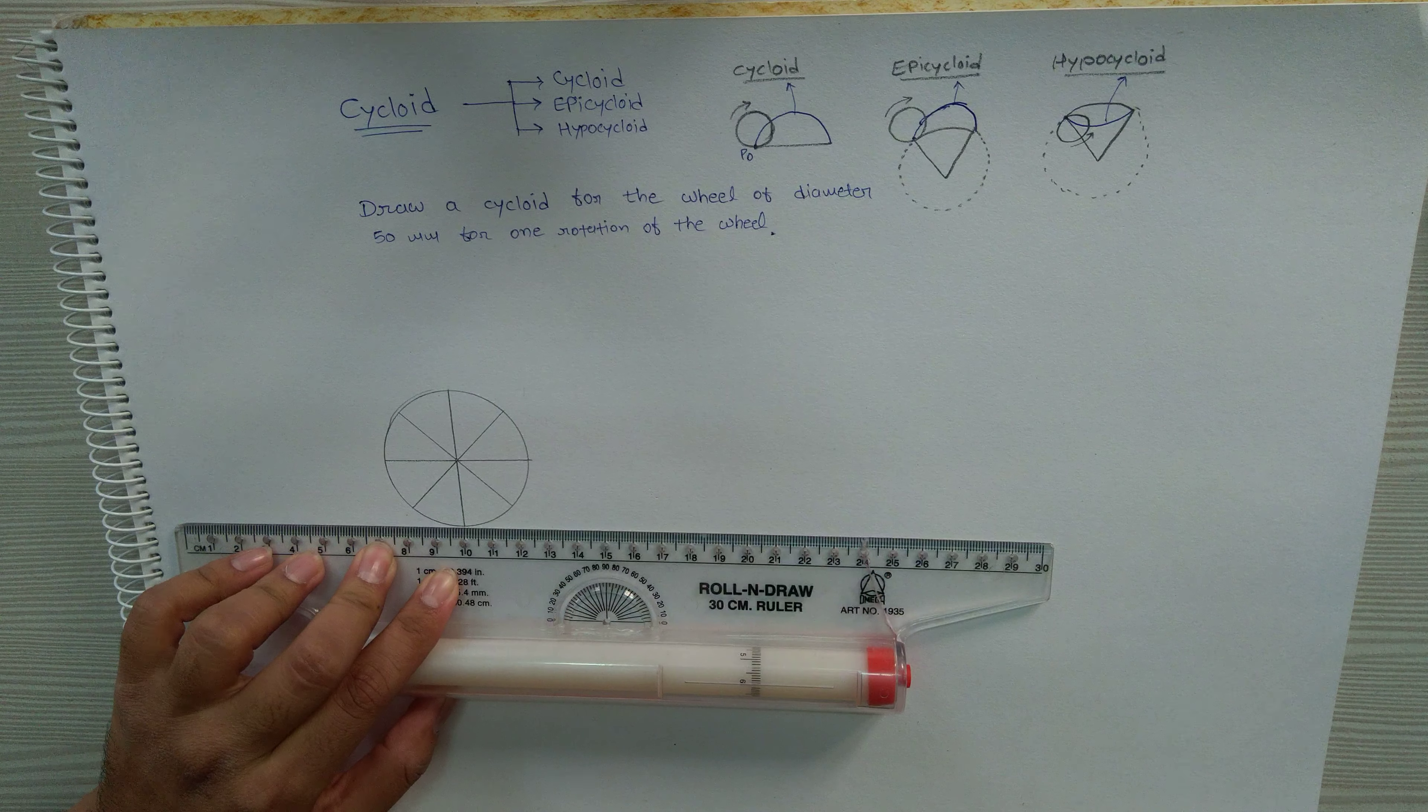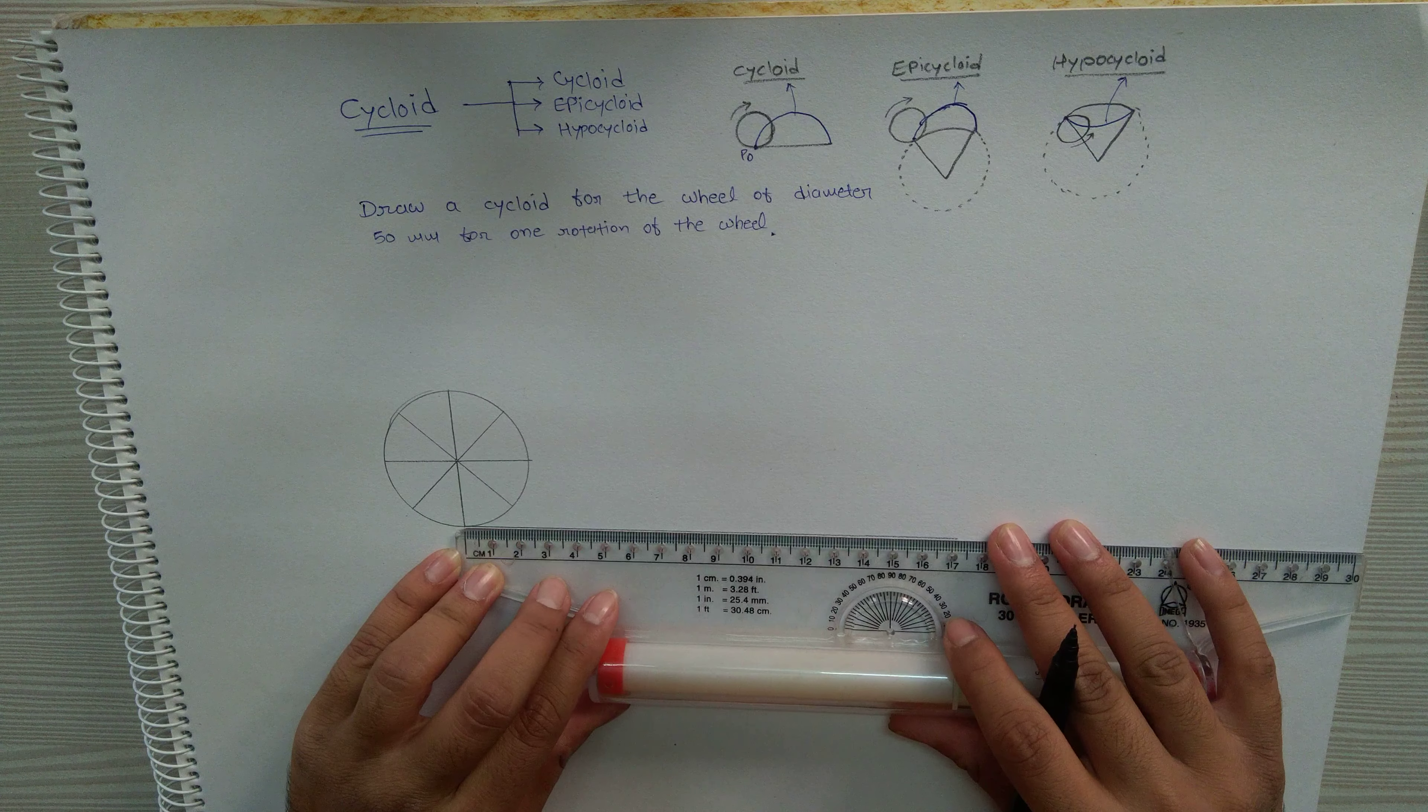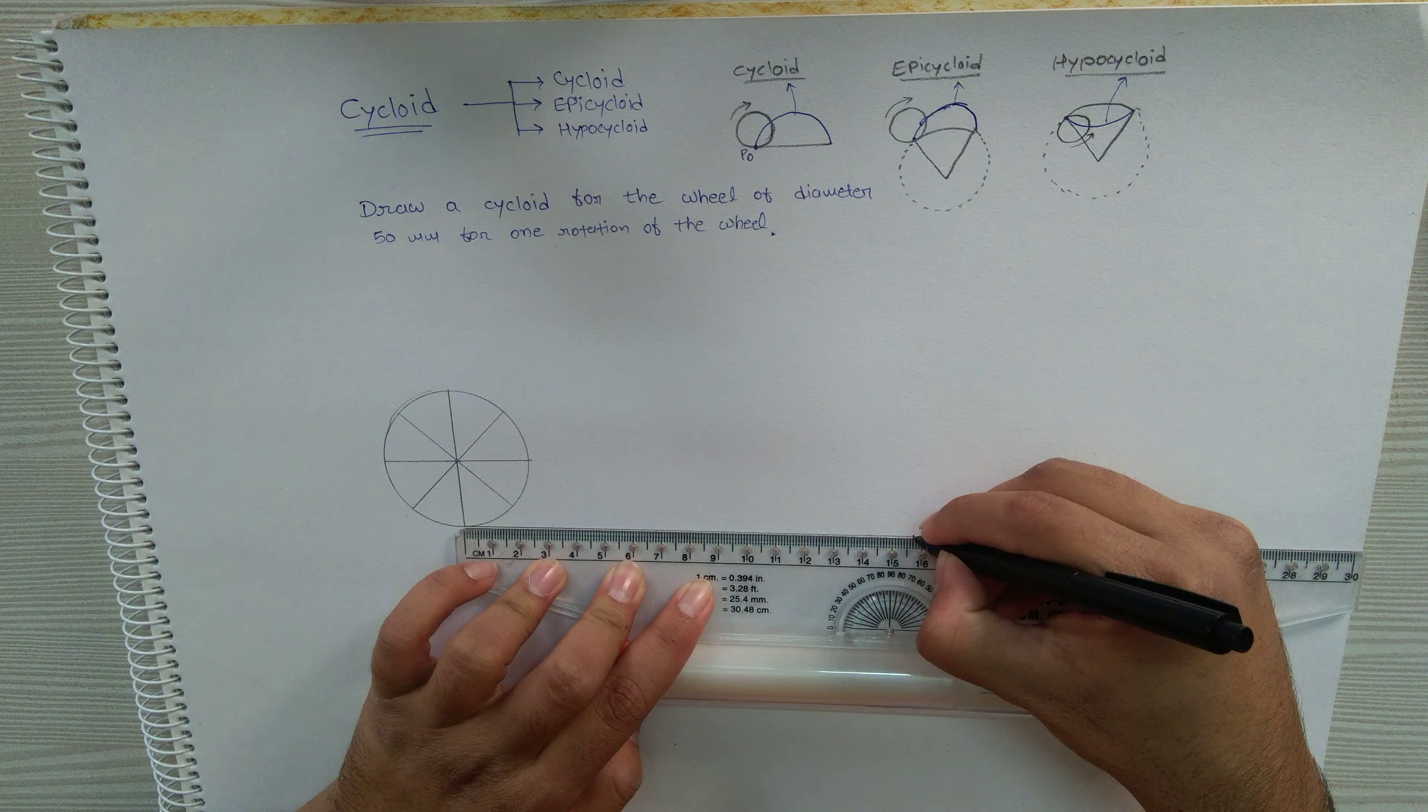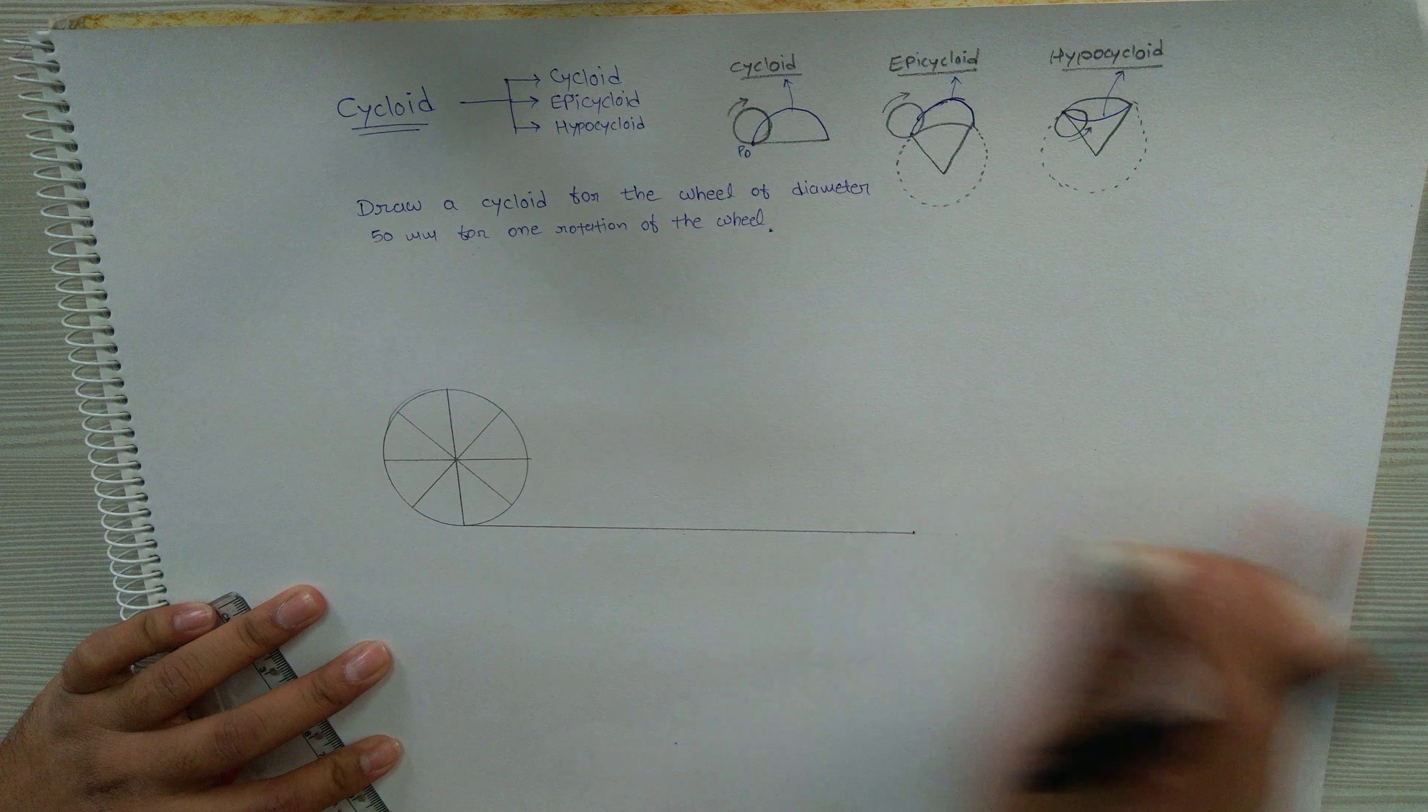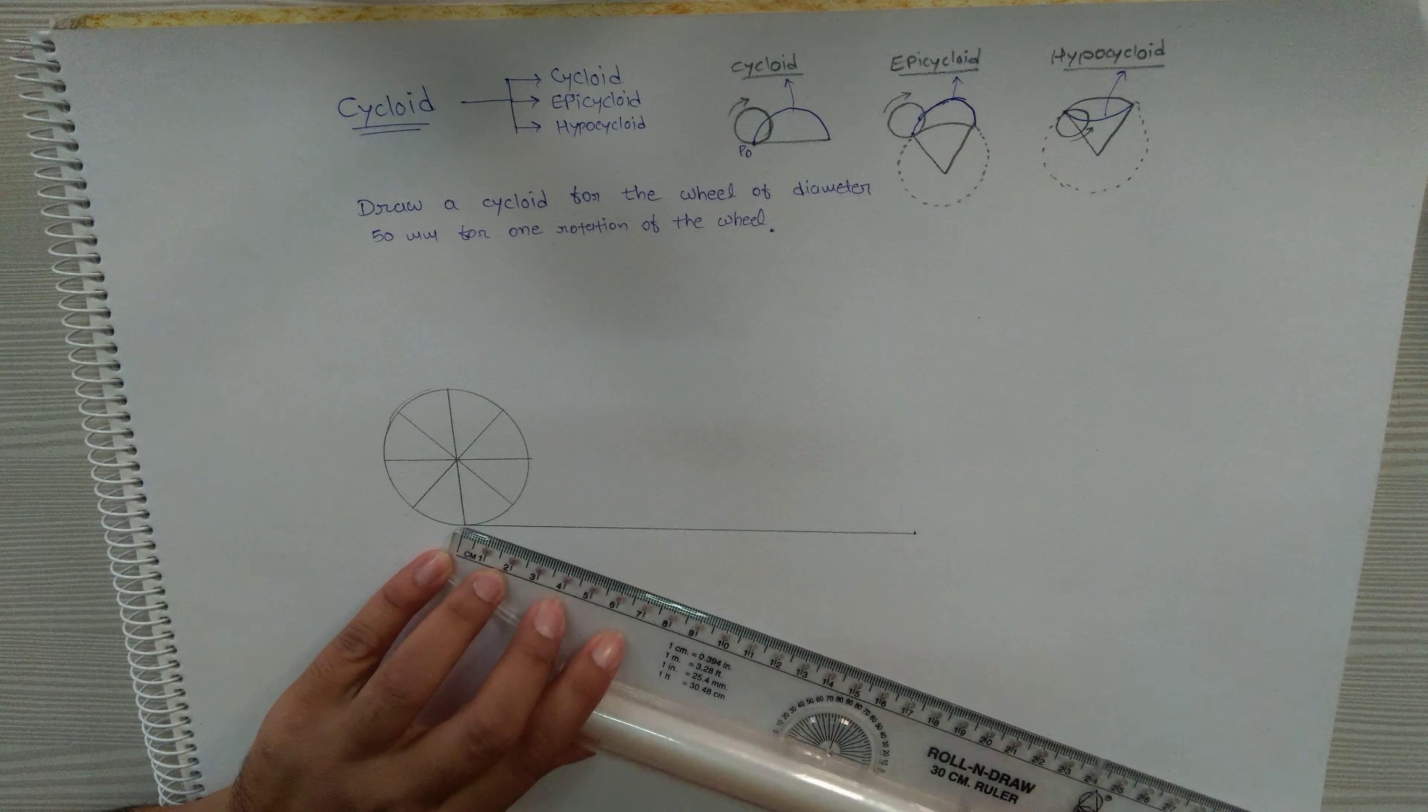I will first mark 157 mm on the line, and I will divide this 157 mm into the same number of parts for which I have divided the circle. I have divided the circle into eight equal parts, so here also I will make eight equal parts. To make exact eight equal parts, I will first make eight equal parts on an angular line.